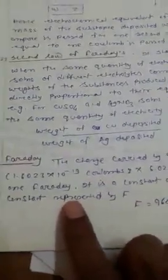So, we can write 96500 coulombs. This is called 1 faraday or faraday constant. Thank you very much.